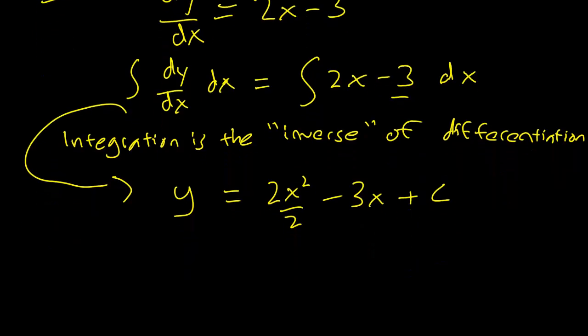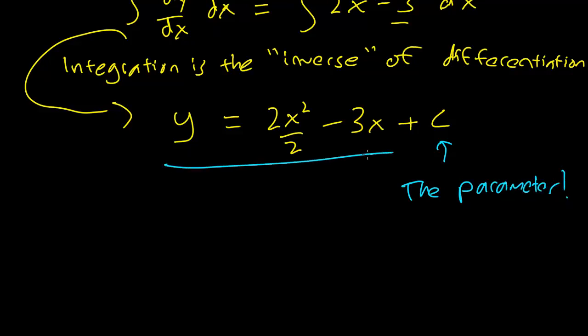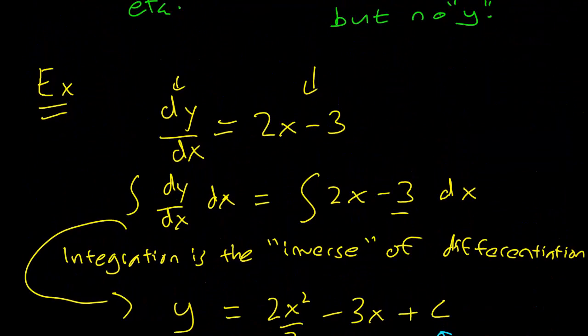This plus c is the parameter that we were talking about, and this value is going to be our general solution to the equation dy dx equals 2x minus 3.